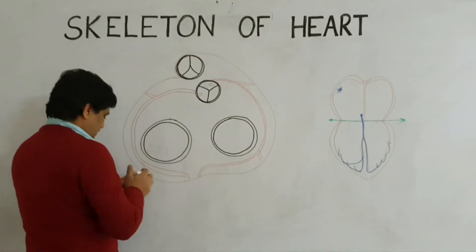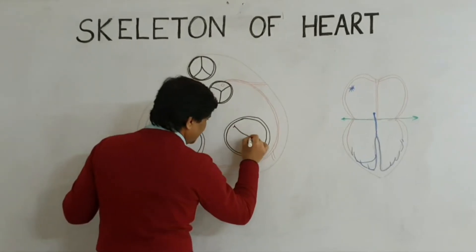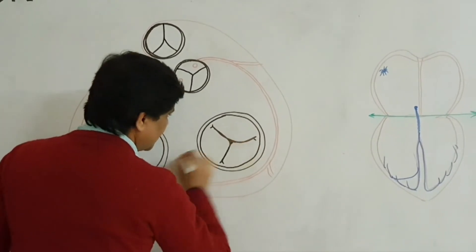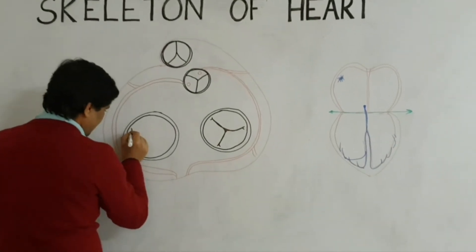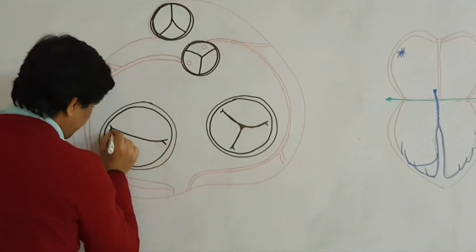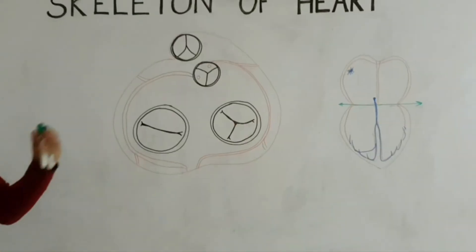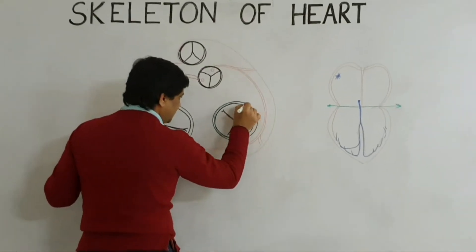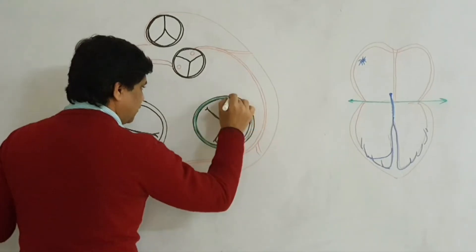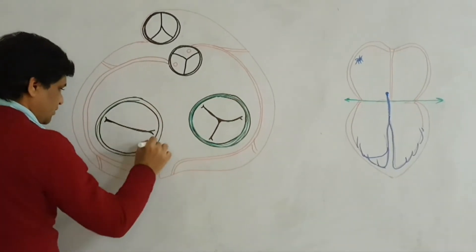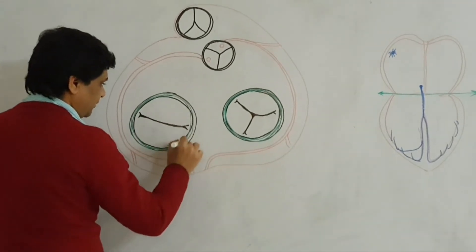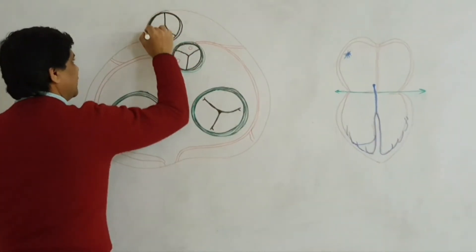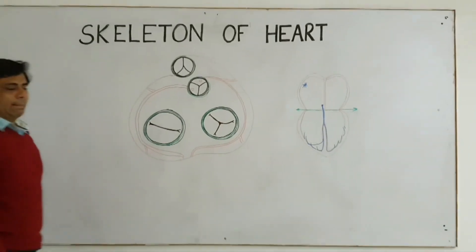So as already told, these are the rings. This one will be a tricuspid — this is the right AV ring, so it surrounds the tricuspid valve. And this one is the mitral, or the left AV valve ring. The green color I am using is for the fibrous tissue. So remember, this is a fibrous ring surrounding the tricuspid valve, and you also have a fibrous ring surrounding the mitral valve. Similarly, here also there will be fibrous condensation of the nearby fibrous tissues around the aortic ring.